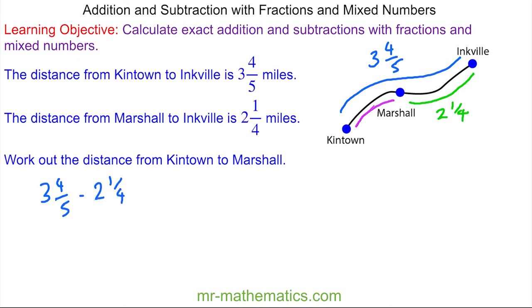So again I'm going to write them as a top-heavy fraction. The three is fifteen-fifths plus the four-fifths which is nineteen-fifths. The two is eight-quarters added to the one more which is nine-quarters.